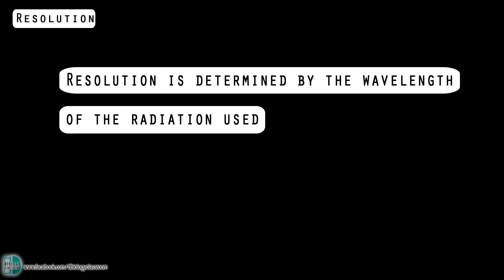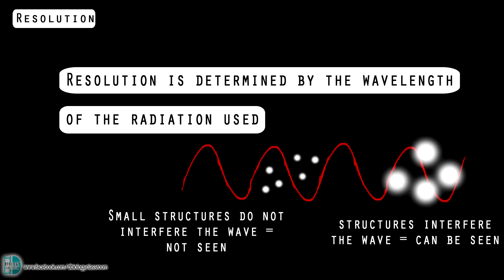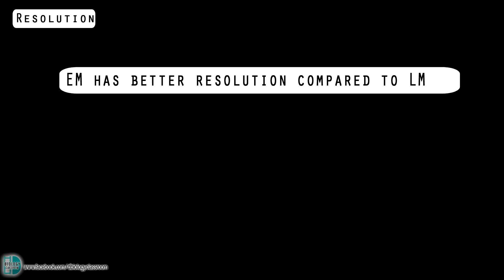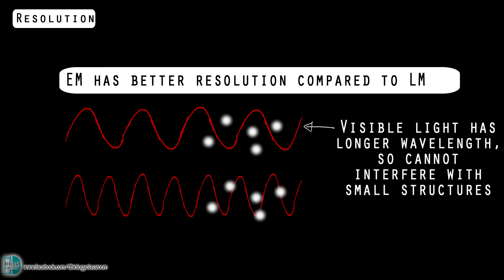Resolution is determined by the wavelength of the radiation used to view the specimen. If the parts of the specimen are smaller than the wavelength of the radiation, then the waves are not stopped by them and they are not seen. Light microscopes have limited resolution compared to electron microscopes because light has a much longer wavelength than the beam of electrons in an electron microscope.